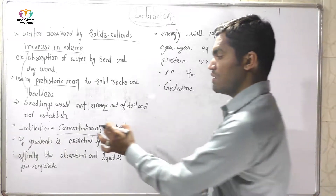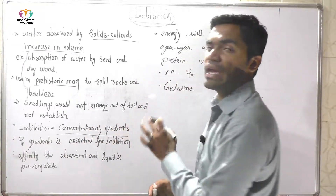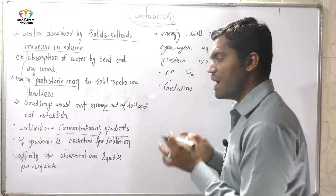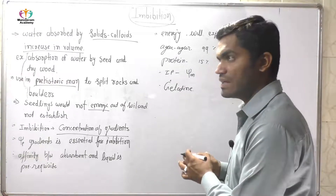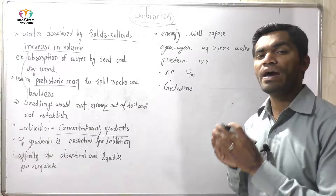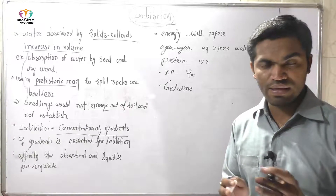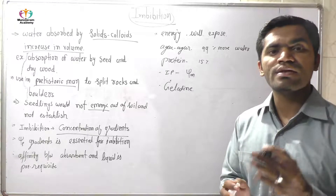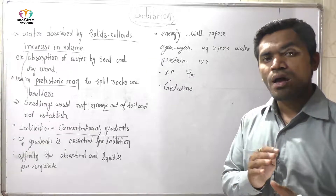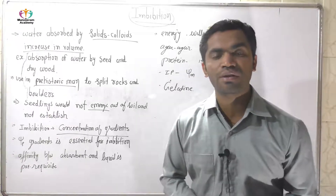It is necessary that a concentration gradient occurs. When the concentration gradient happens, imbibation is possible. Without the concentration gradient, imbibation cannot occur. So imbibation is very essential — we can say imbibation is very necessary — for the seed, for germination of the seed.